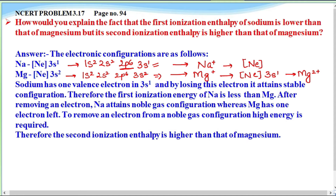Sodium has one valence electron in 3s1. By losing this electron, it attains a stable configuration. Therefore, the first ionization energy of sodium is less than that of magnesium. After removing one electron, Na attains the stable noble gas configuration, whereas magnesium as Mg-positive still has one electron remaining. To remove an electron from a noble gas configuration, high energy is required.